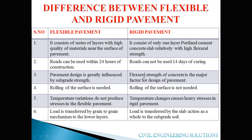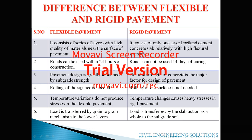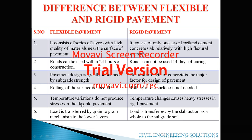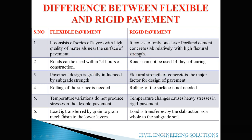In flexible pavement, rolling of the surface is needed after construction — rollers are required to make the surface even. In rigid pavement, rolling of the surface is not needed. Regarding temperature: in flexible pavement, temperature variation does not produce stresses, but in rigid pavement, temperature changes cause stresses — for example, expansion or contraction — which result in stresses being induced in the rigid pavement.